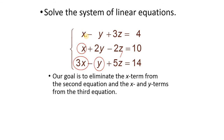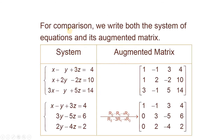This method requires us to write the augmented matrix and then find the row echelon form. For comparison, we will write both the system of equations and its augmented matrix side by side. Here we write the original system of equations and here we write the augmented matrix. Now we have to convert this matrix into row echelon form.